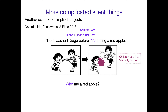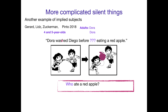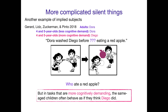It turns out that four and five year olds do this too. Children age four mostly also color Dora's apple red, thinking that Dora is the silent subject of eating a red apple. But interestingly, if you place them in a more cognitively demanding environment where they're distracted and there's other things going on, then four and five year olds behave as if they think Diego is the one who's the silent subject — Diego is the one eating a red apple.